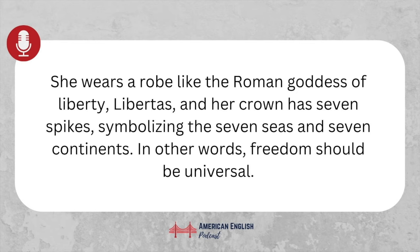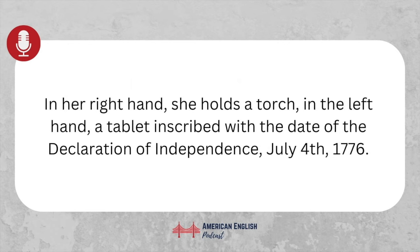Her crown has seven spikes, symbolizing the seven seas and seven continents. In other words, freedom should be universal. In her right hand, she holds a torch. In the left hand, a tablet inscribed with the date of the Declaration of Independence, July 4th, 1776.